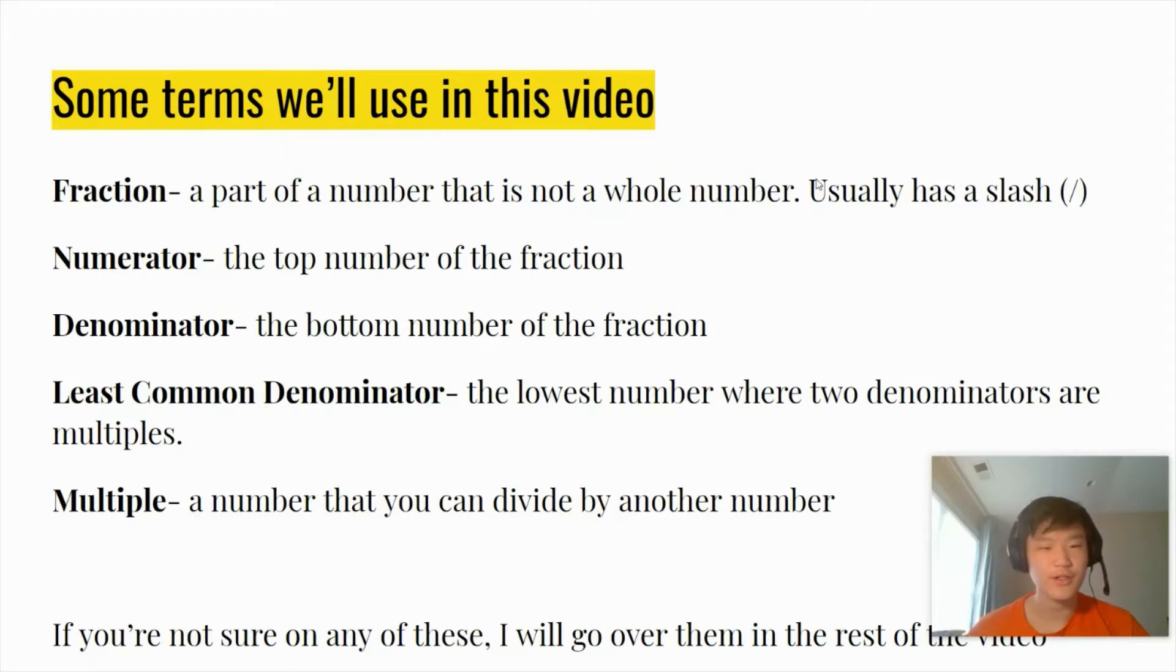So some of the terms we'll use in this video are: a fraction, a part of a number that is not a whole number and usually has a slash. The numerator is the top number of the fraction. The denominator is the bottom number of the fraction. Least common denominator is the lowest number where two denominators are multiples and a multiple is a number you can divide by another number. If you're not sure on any of these, I'll go over them in the rest of the video.